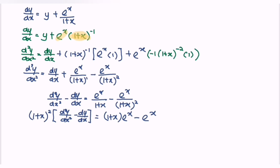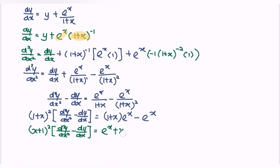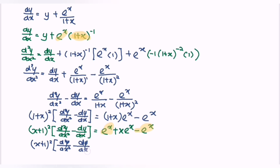Expanding the right side: (1 plus x) squared times [second derivative minus first derivative] equals eˣ plus x·eˣ minus eˣ. Simplifying, eˣ and negative eˣ cancel, giving zero from those terms, and we are left with (1 plus x) squared times [second derivative minus first derivative] equals x·eˣ. This matches the required result, so the situation has been shown. Thanks for watching.